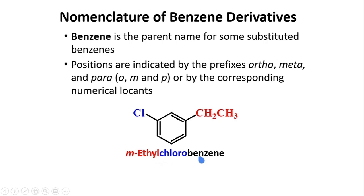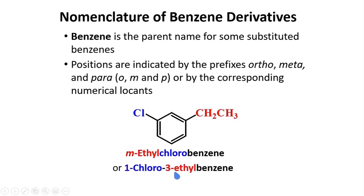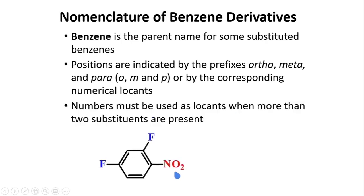If we use numerical locants, we again consider alphabetical priority — chlorine should be named first, followed by ethyl, giving us 1-chloro-3-ethylbenzene. Numbers must be used as locants when more than two substituents are present. In that case, we cannot use the ortho, meta, and para prefixes anymore.